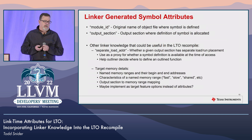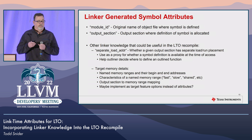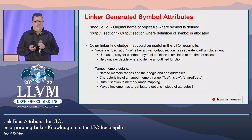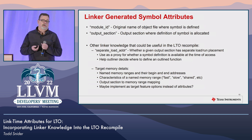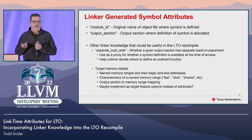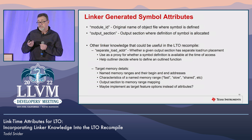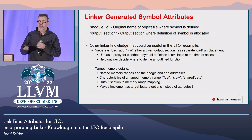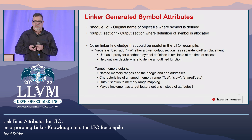One additional attribute worth discussing, besides module ID and output section, is a separate load address. This indicates whether a given output section has separate load and run placement. We can use this as a proxy for whether a symbol definition is available at the time of access, giving us an advantage over making an overly conservative decision when using output sections alone.